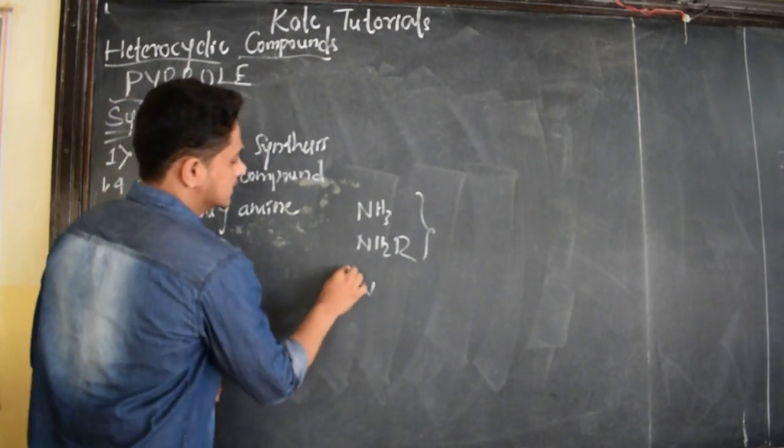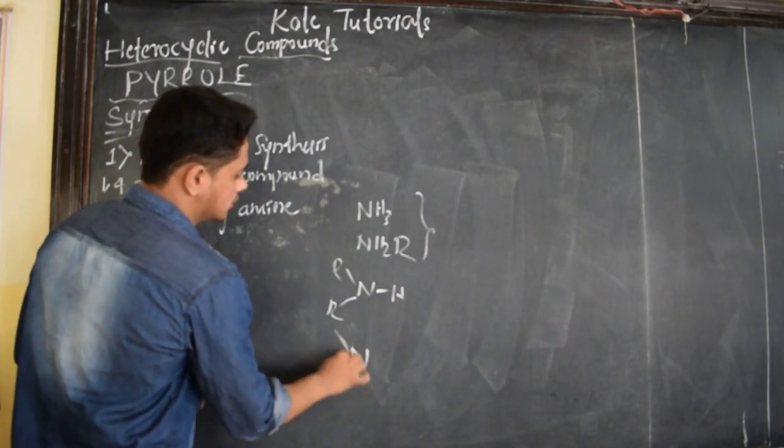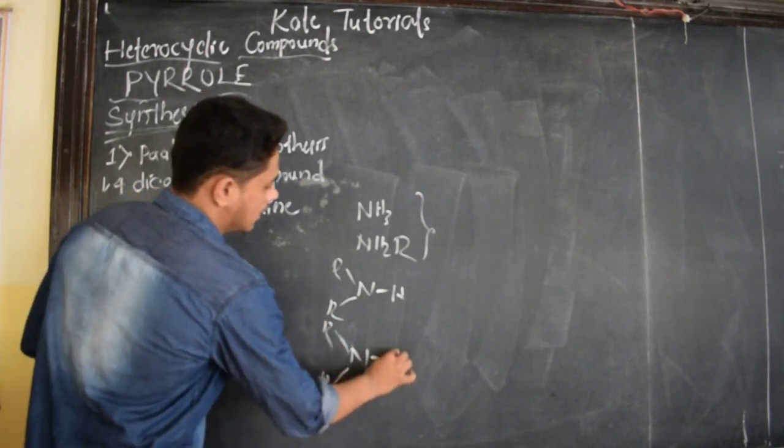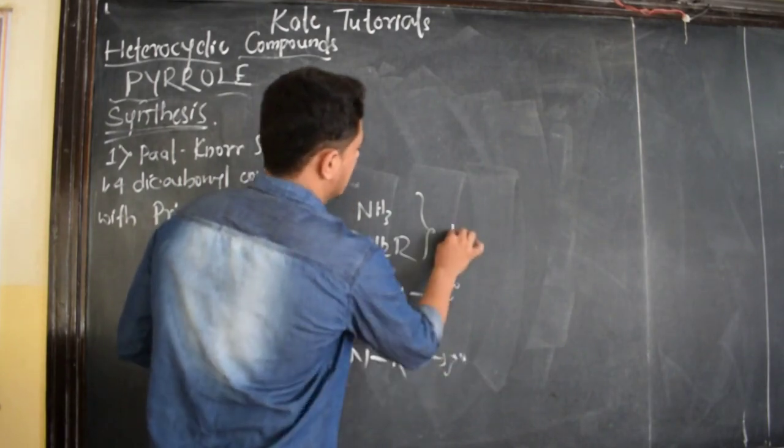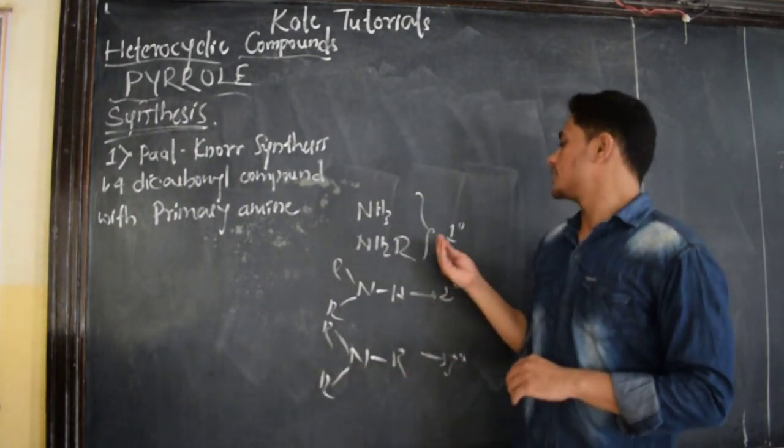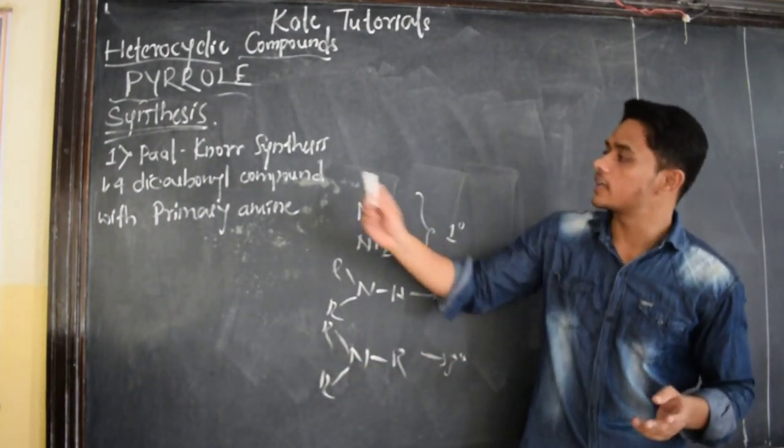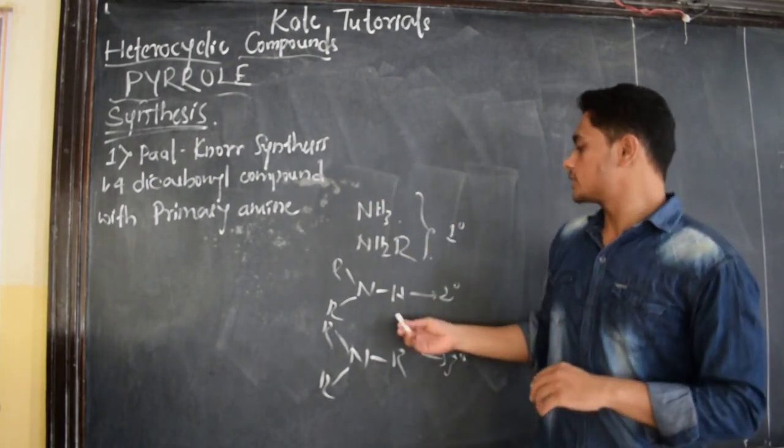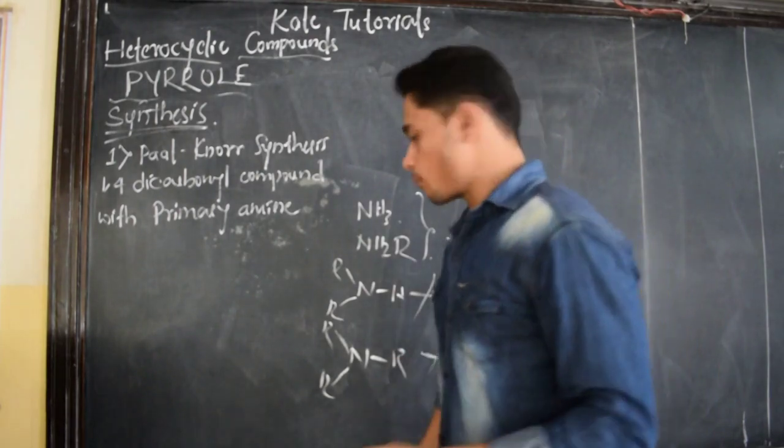Whereas this R is only single H or R. This is secondary amine and this is tertiary amine. If we react the 1,4-dicarbonyl compound only with this primary amine or ammonia, we are going to get pyrrole. Otherwise, if we react with secondary or tertiary, we are not going to get the product.